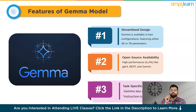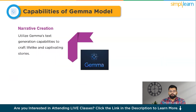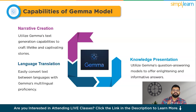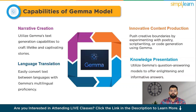Moving forward, we'll see what the capabilities of Gemma are. Starting with number one, that is compelling narrative creation, which utilizes Gemma's text generation capabilities to craft lifelike and captivating stories. Then we have seamless language translation: easily convert text between languages with Gemma's multilingual proficiency. Next is knowledge presentation: utilize Gemma's question answering models to offer enlightening and informative answers. And then innovative content production: push creative boundaries by experimenting with poetry, script writing, or code generation using Gemma.